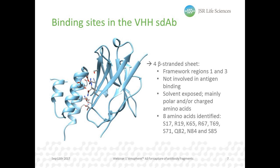The binding sites for protein A are located in the framework regions 1 and 3 of the VHH, at the site of the sheet with four beta strands, which is solvent-exposed and not involved in antigen binding. Eight amino acids have their side chains oriented towards the protein A molecule, and these are mainly polar and/or charged amino acids. Here you can see all the amino acids involved in the interaction between the VHH and protein A.